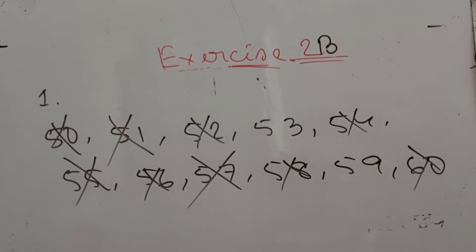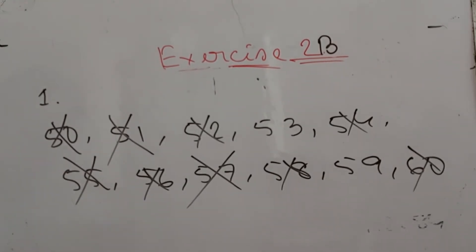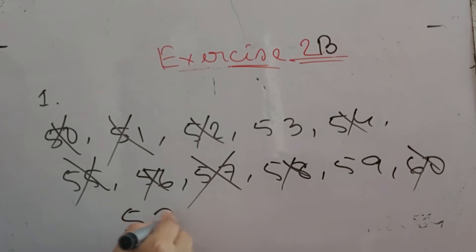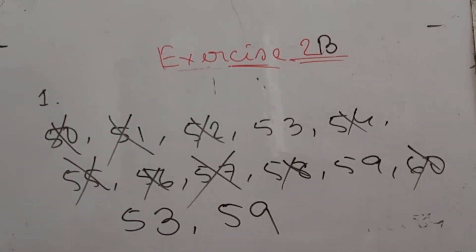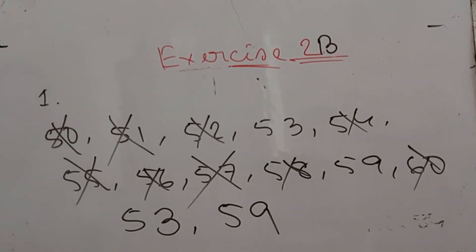So here we've got only 2 prime numbers between 50 and 60. That is 53 and 59. So 53 and 59 are the only 2 prime numbers between 50 and 60.